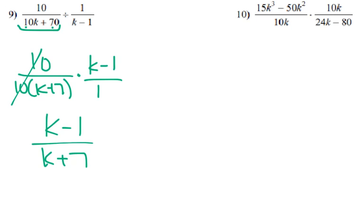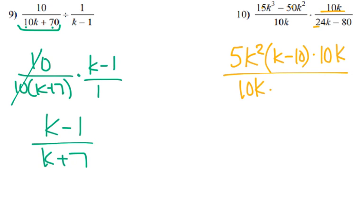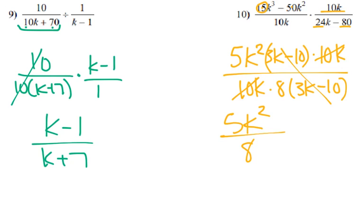For number 10, we can pull out 5, right? And a k², so 5k² times k minus 10 times that 10k over 10k times. We can pull out an 8, 8 times 3k minus 10. Oh, and that, if I pulled out, would be a 3k, wouldn't it? So 3k minus 10, 10k, so we're left with 5k² over 8, which we can't reduce any further.